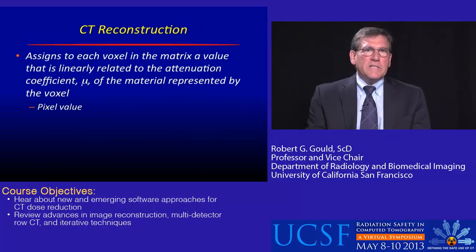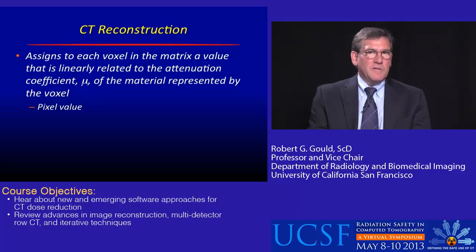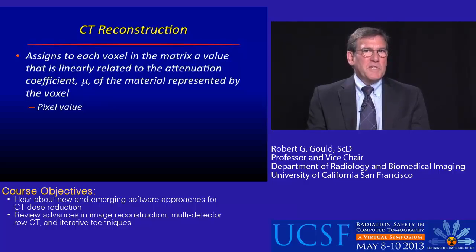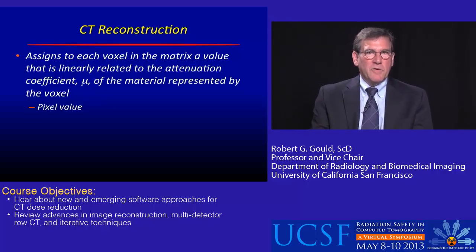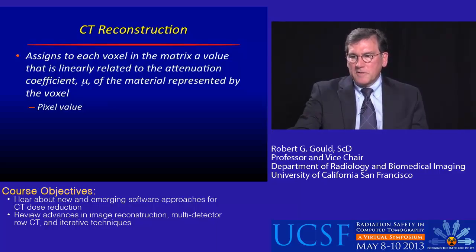So the task of the CT reconstruction is to assign each voxel in the matrix a value that is linearly related to the attenuation coefficient of the material represented by the voxel — to come up with a pixel value for each of the elements in our matrix.